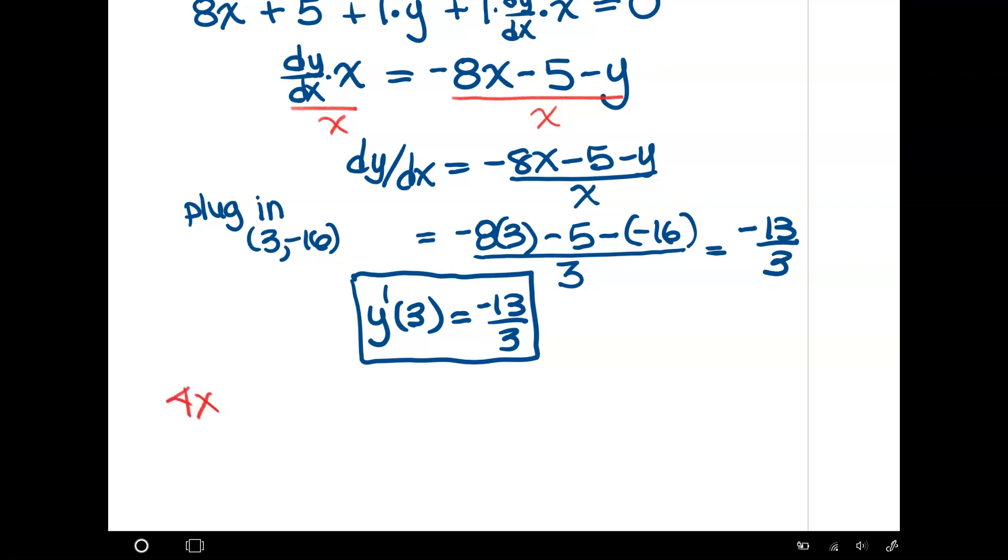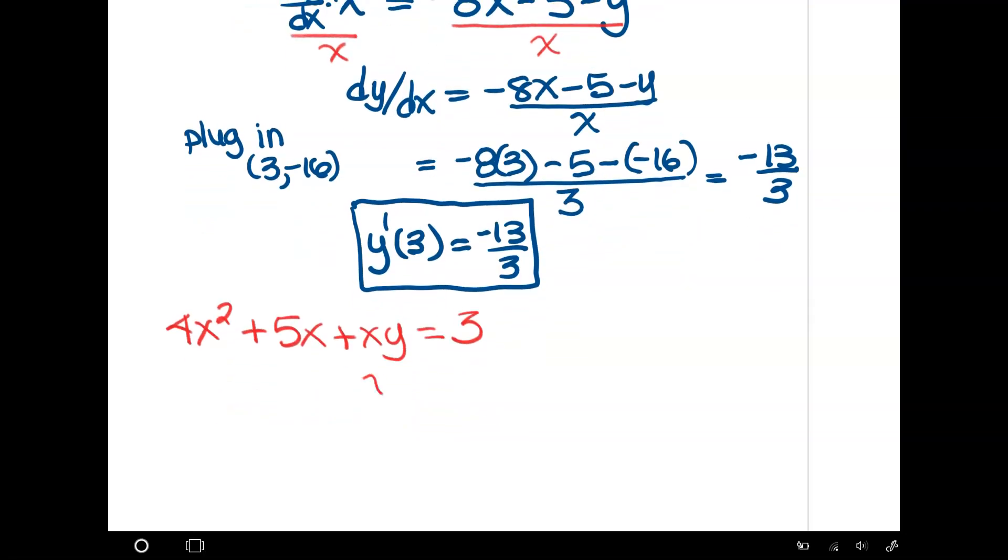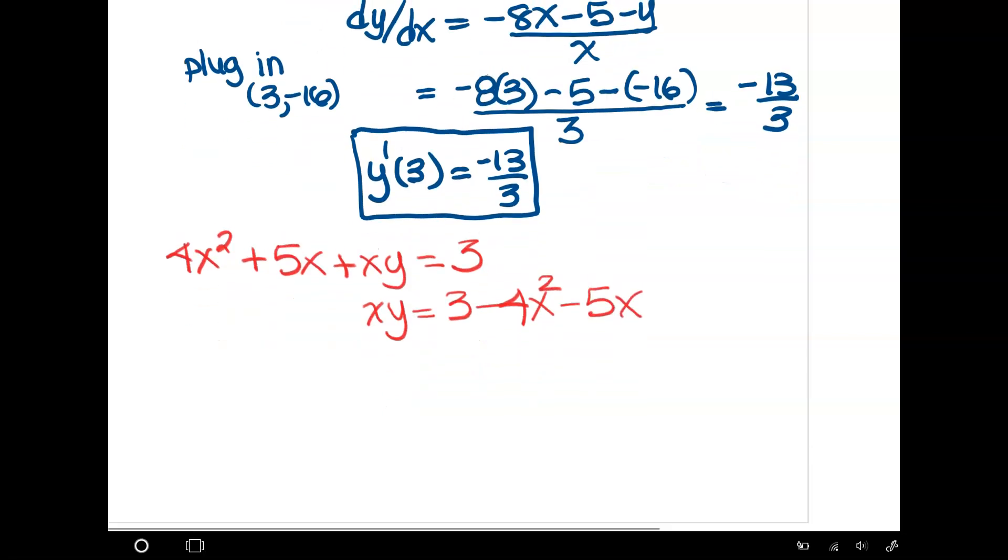So if we have 4x² + 5x + xy = 3, let's say I solve for y. I'm going to throw these x terms to the other side. So I have xy = 3 - 4x² - 5x. Let's divide every term by x. When I'm dividing by x, I'm getting my y by itself, solving it explicitly. So I have y = 3/x - 4x - 5.